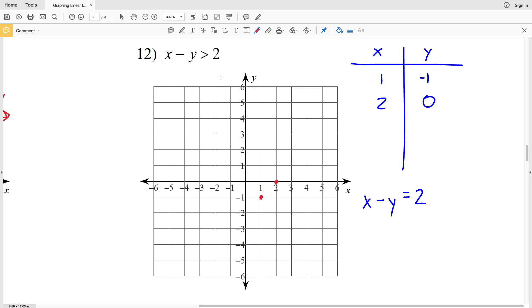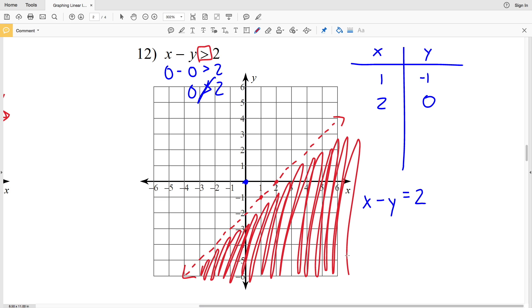Now let's plot those two points: 1, negative 1 and 2, 0. Those are going to be connected with a dashed line since it's greater than, not greater than or equal to. Now let's use our test point of 0, 0. Plugging 0 in for X and 0 in for Y, we get that 0 is greater than 2, which is not true. Therefore we shade the region that doesn't include that point 0, 0, so it's going to be everything to the right of our dashed line.